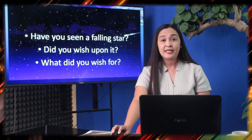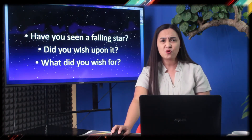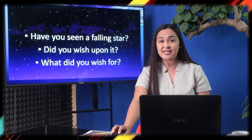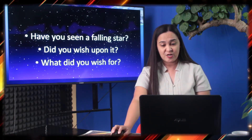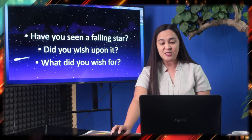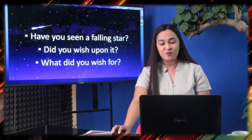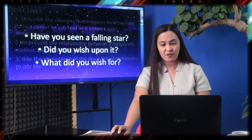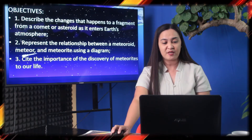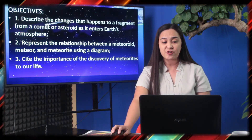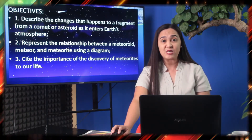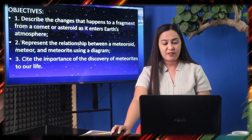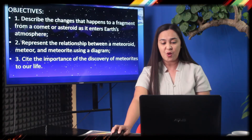Have you seen a falling star? Did you wish upon it? Have you tried to be a spectator of an amazing phenomenon that only a meteor shower can make you feel the wonders of the sky? Let us learn together as we explore what meteors, meteorites, and meteoroids are. Today, we will be guided with the following objectives: First, describe the changes that happen to a fragment from a comet or asteroid as it enters Earth's atmosphere. Second, represent the relationship between a meteoroid, meteor, and meteorite using a diagram. And third, cite the importance of the discovery of meteorites to our life.